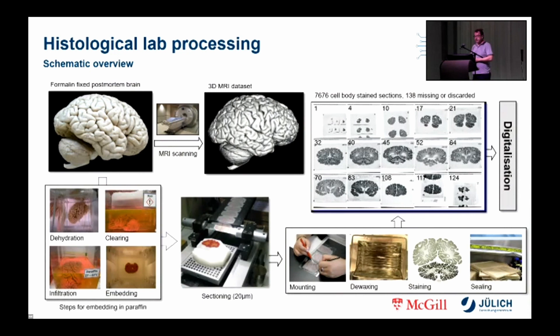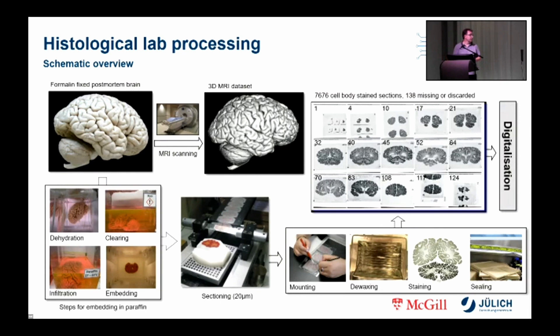Preparation, sectioning and histological processing took place in Düsseldorf at the Vogt Institute, headed by Karl Zilles at that time, and resulted in a total of 7676 cell-body-stained coronal sections at 20 micron thickness. It's important to keep in mind that the sections have to go through a large number of processing steps before they are ready for digitalization, and although all steps were carried out by the lab team with great care and expertise, artifacts in these very delicate and sensitive sections could not be avoided.